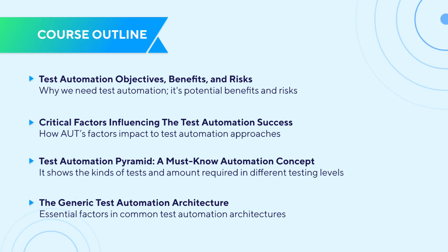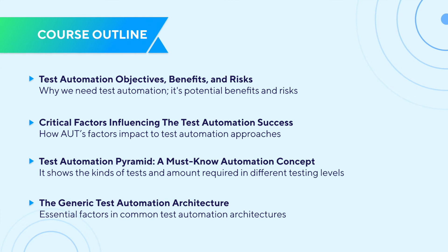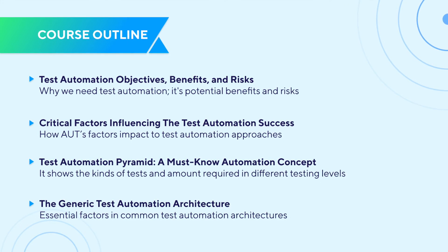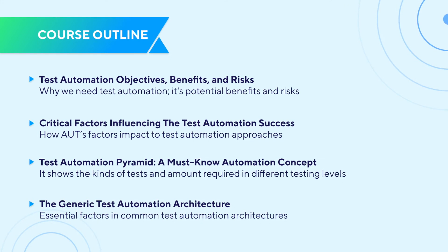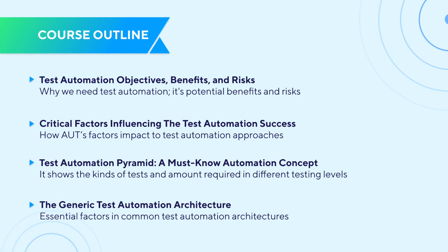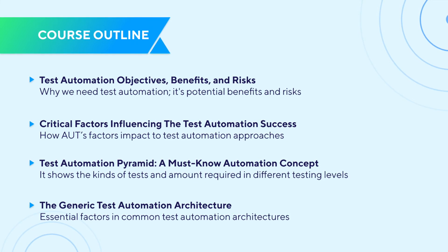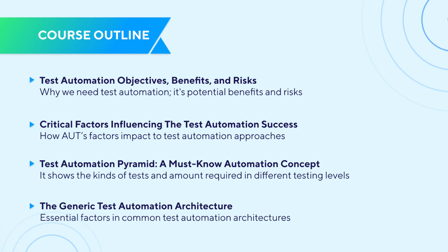You will also learn about the test automation pyramid, knowing essential types of automated testing and the key considerations when applying them to your project. Finally, we'll walk you through the four layers of a generic test automation architecture, including test generation, test definition, test execution, and test adaptation.